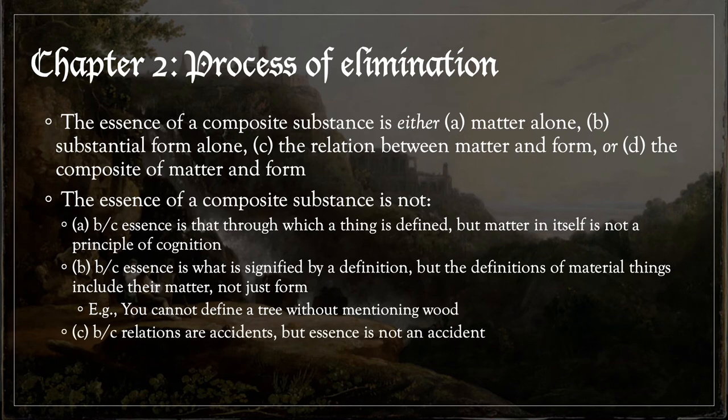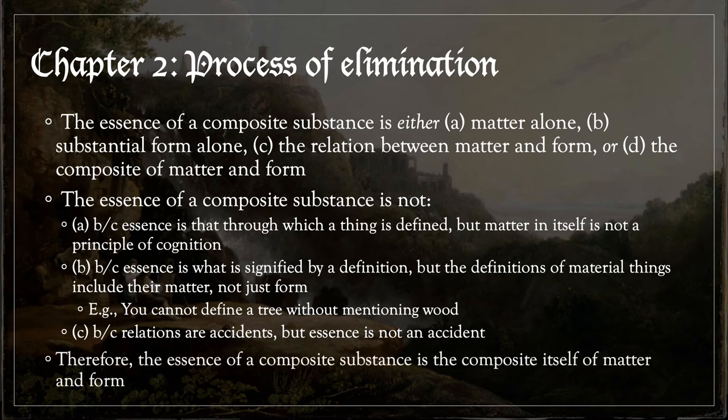Finally, the essence of a composite substance is not C, the relationship between matter and form. That's because relations are accidents, but essence is not an accident. Thus, the essence of a composite substance is the composite itself of matter and form — that is, of sensible matter and substantial form.